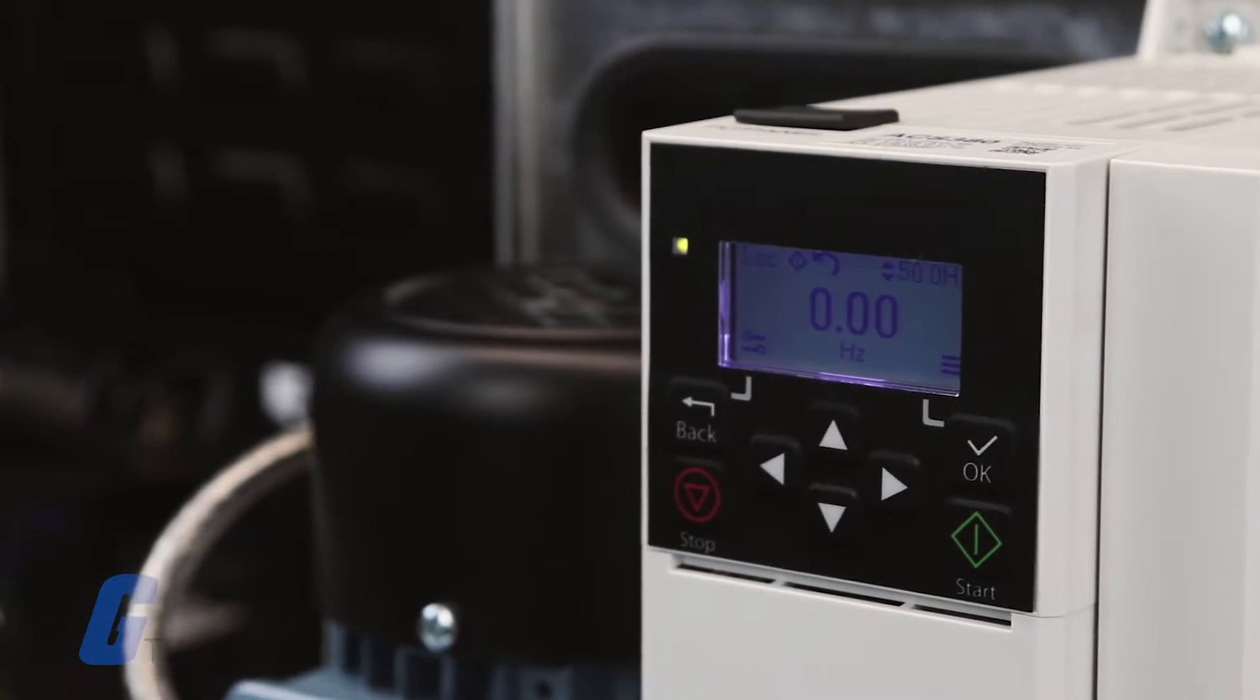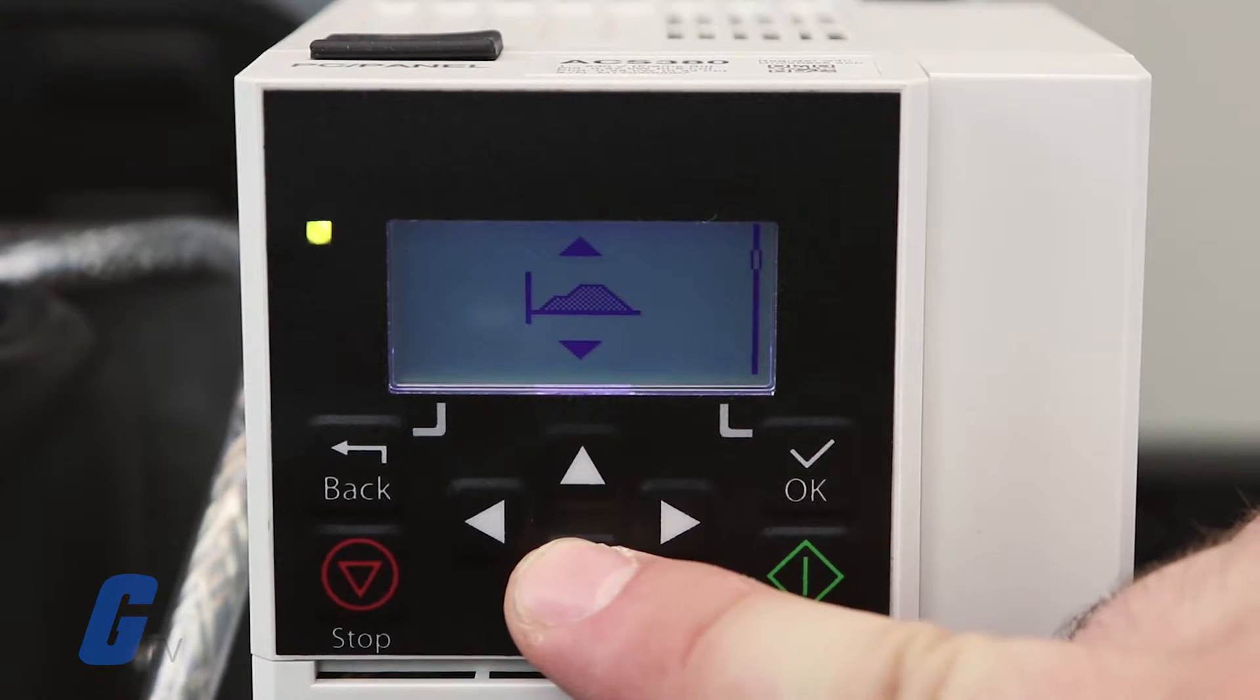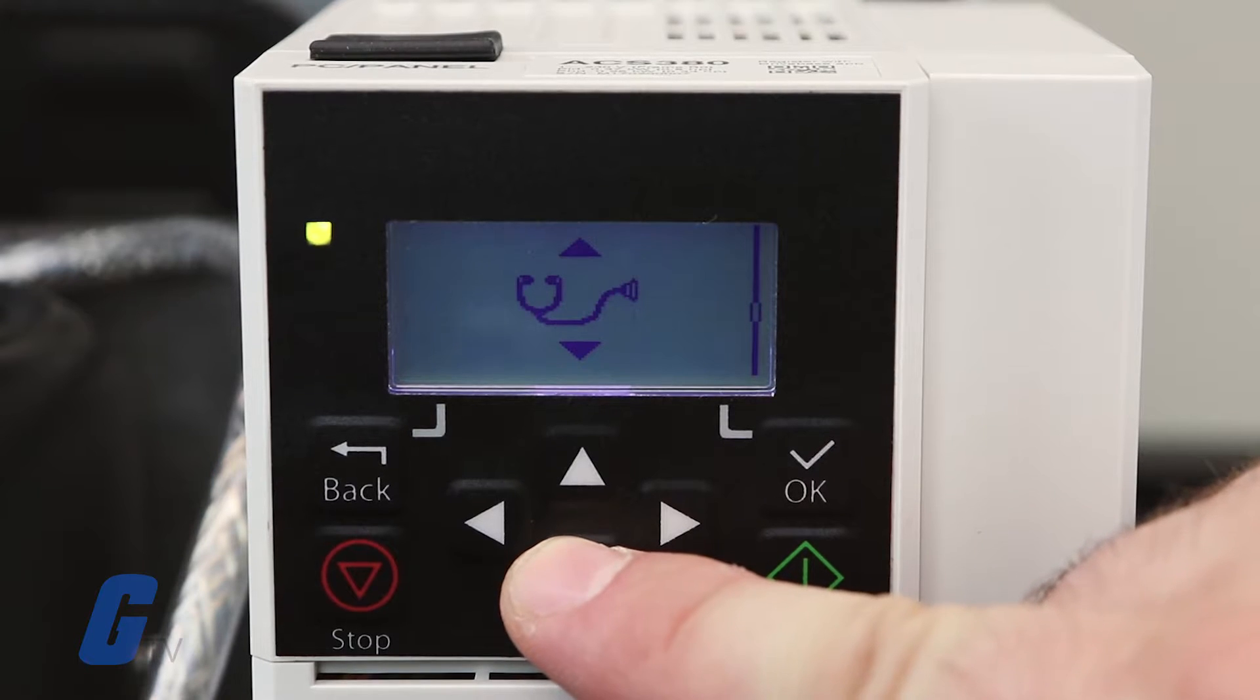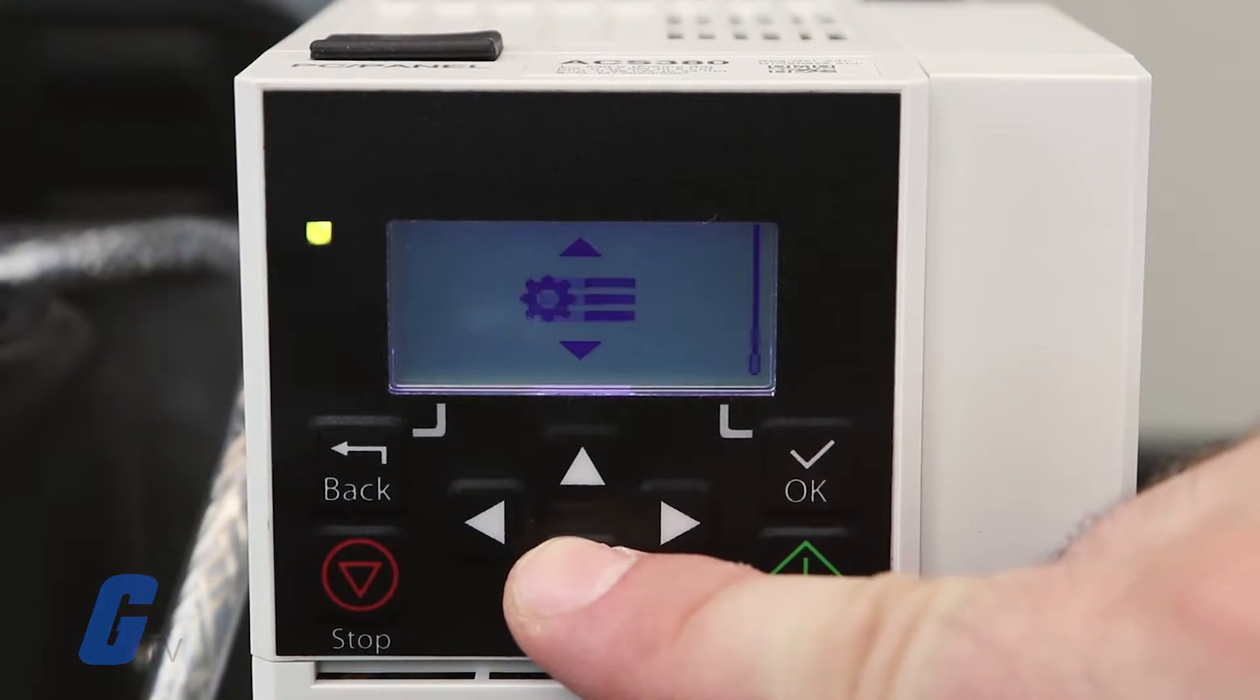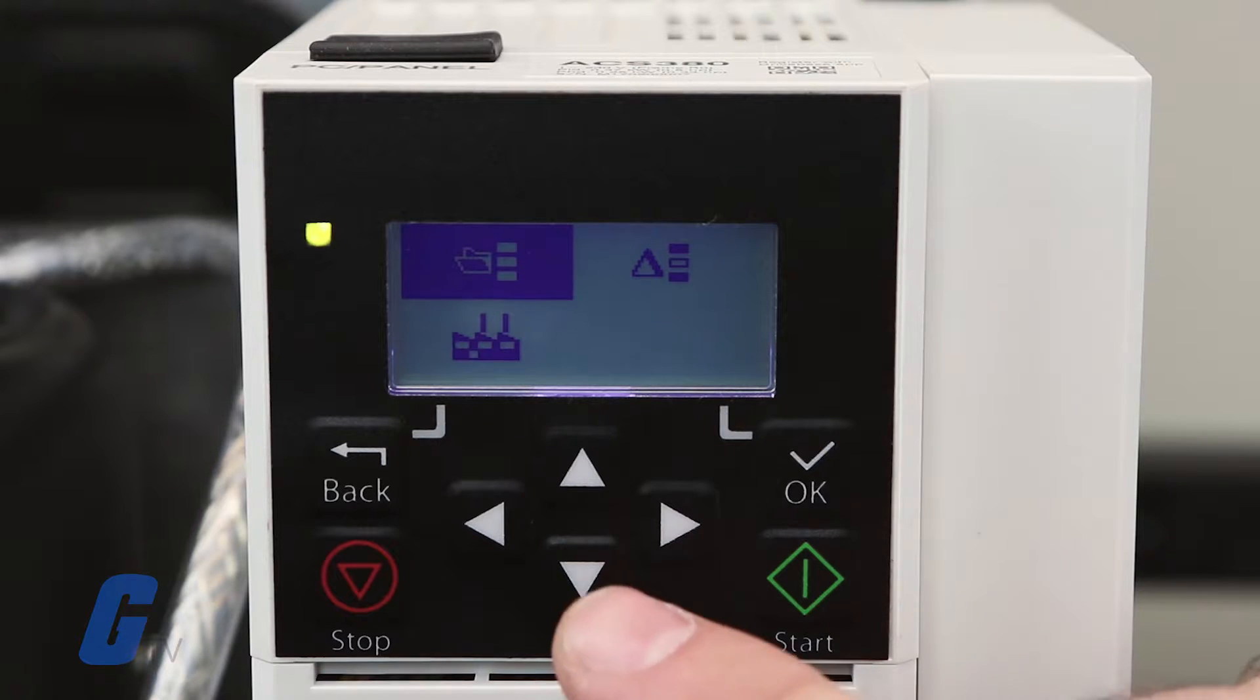To do so, navigate to the parameters menu from the main menu, which is represented by a gear and three lines. Press the OK button to open the menu, then navigate to the third option in the parameter menu.